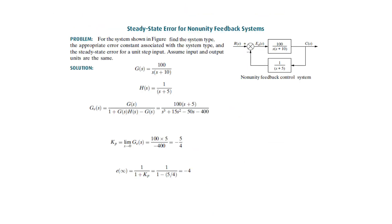Now there is an example to clarify the concepts of steady state error, system type, and static error constants for a non-unity feedback system. We have to find the system type, the appropriate error constant associated with the system type, and the steady state error for a unit step input. One condition is that the input and output units must be the same.